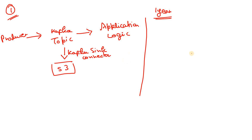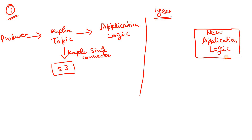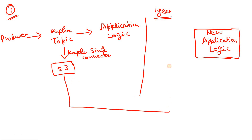After one year, a new requirement comes where you need to process the complete data for the past one year and apply new business logic. So you write a new application logic — maybe in Python or Java — which needs to process that past one year of data. The simple approach would be to have this new application logic consume the data directly from S3, which looks fine for this use case.